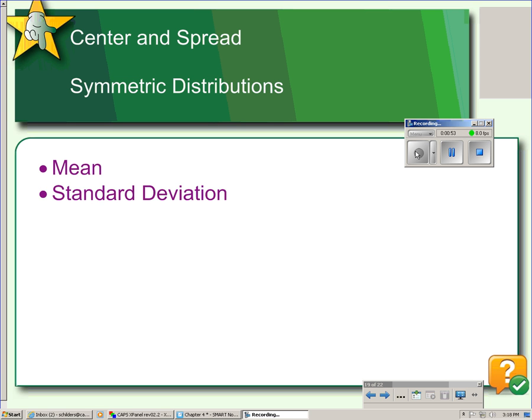Graphically, the mean of a distribution is located at the balancing point of the distribution. In other words, the mean is the value that balances the deviations from the mean.